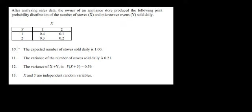Let's have a look at question 10 in this video. So what do we have here? We have sales data on the distribution of the number of stoves, which is denoted by X, and microwave ovens, which is denoted by Y.